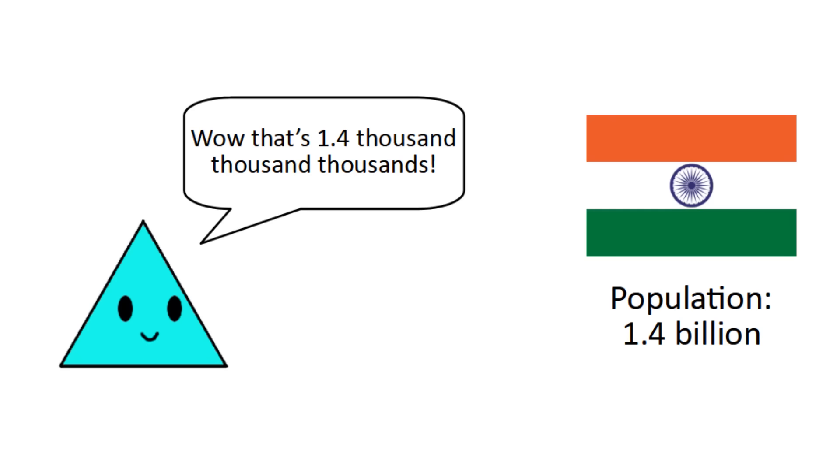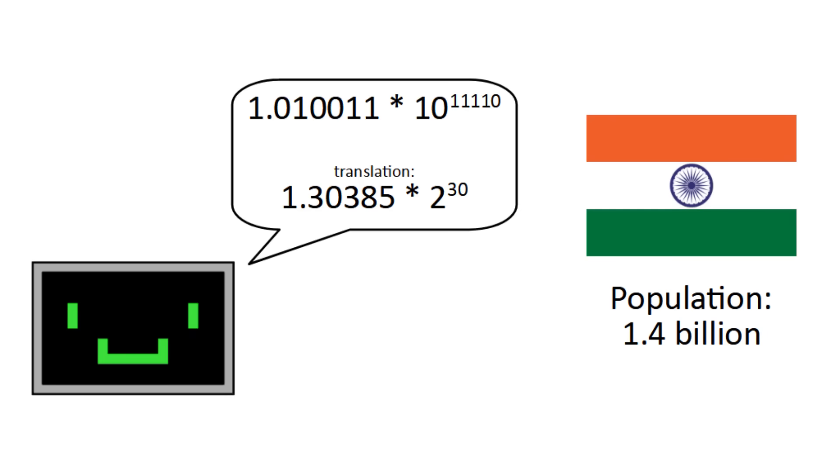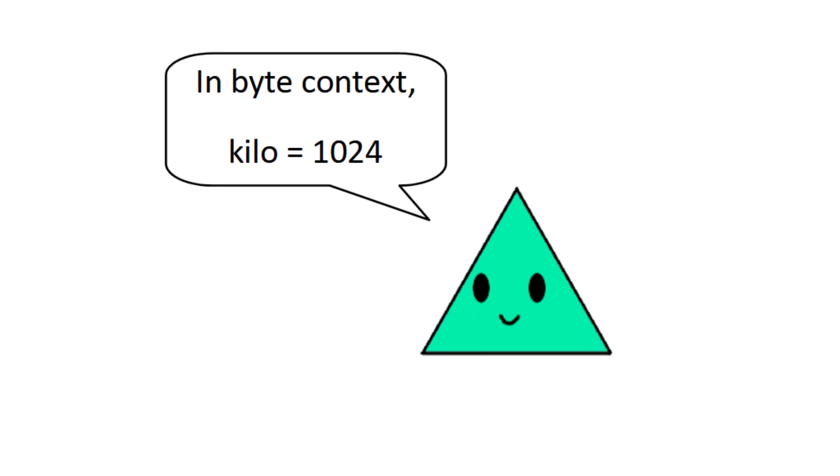Computers, on the other hand, use powers of 2 for just about everything. The coincidence bridges the gap, because you can easily say that when dealing with bytes, kilo means 1024.